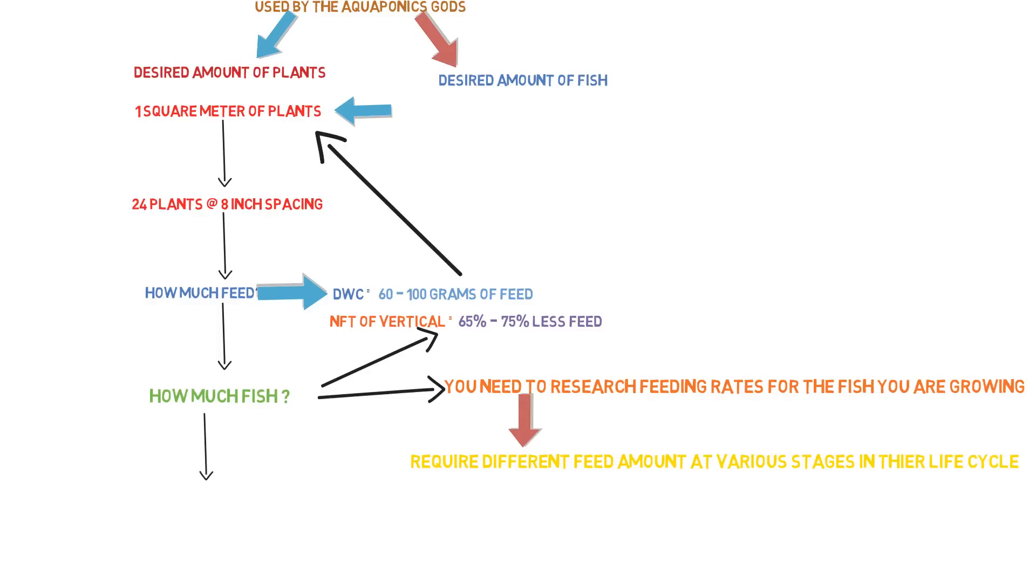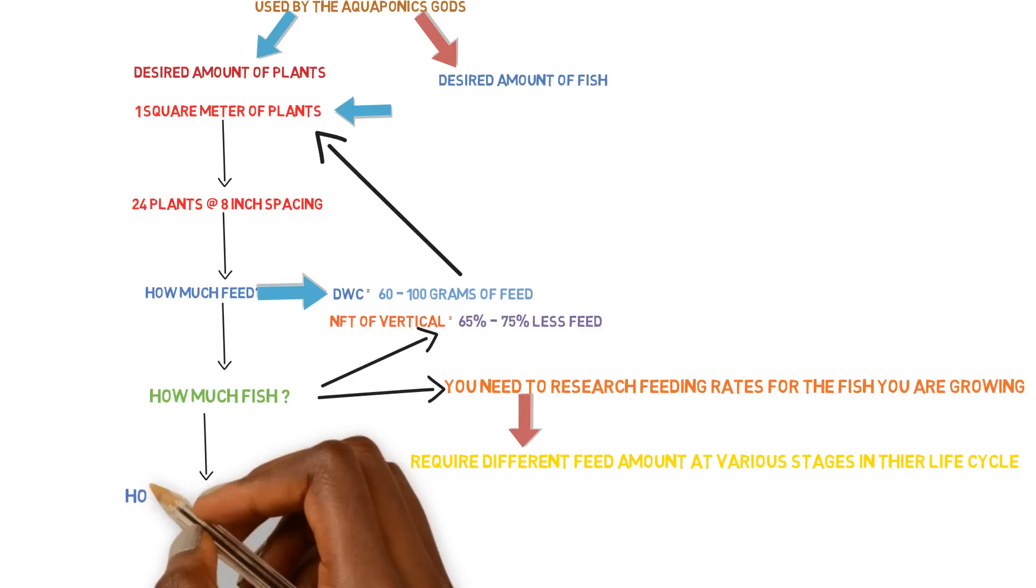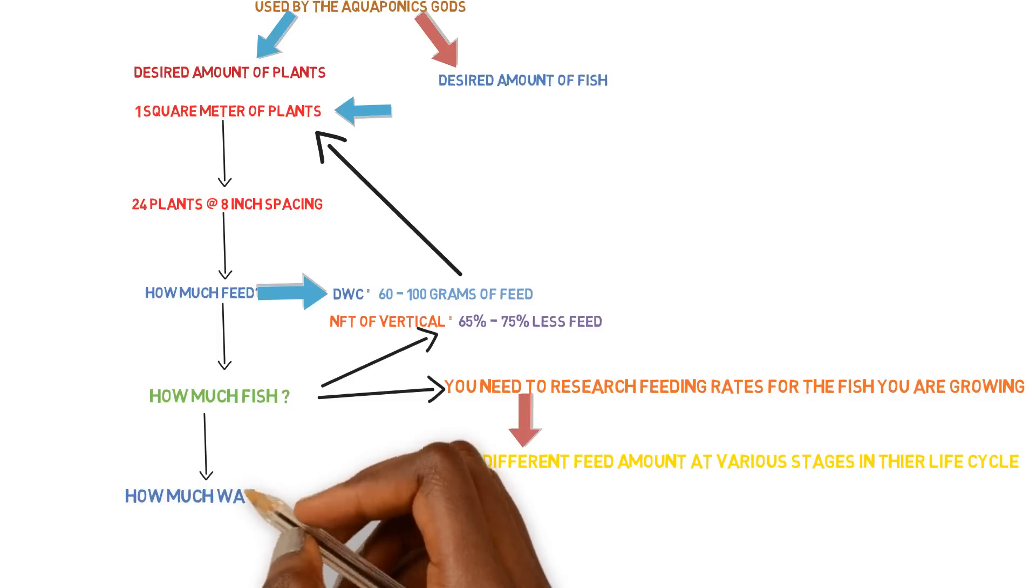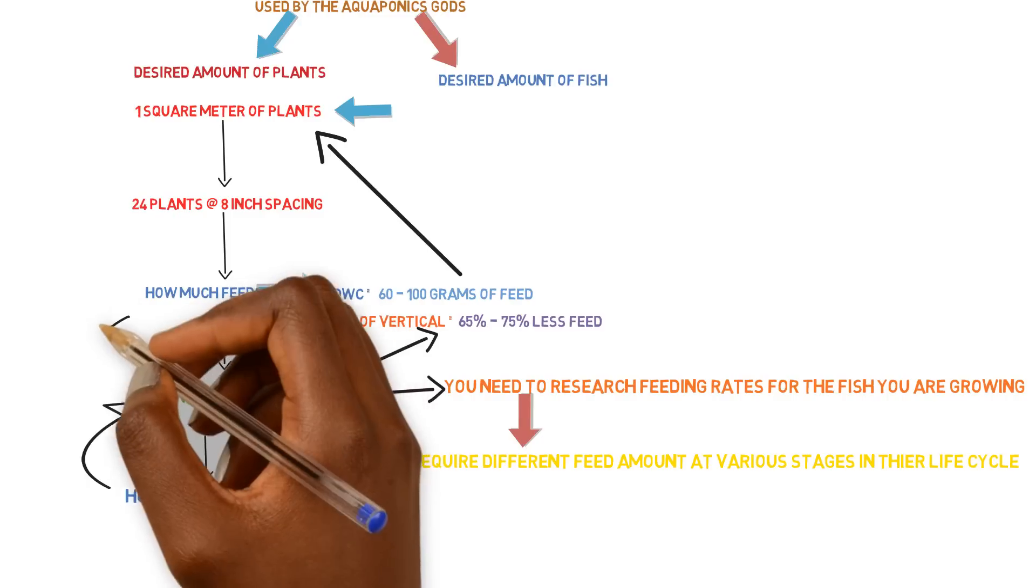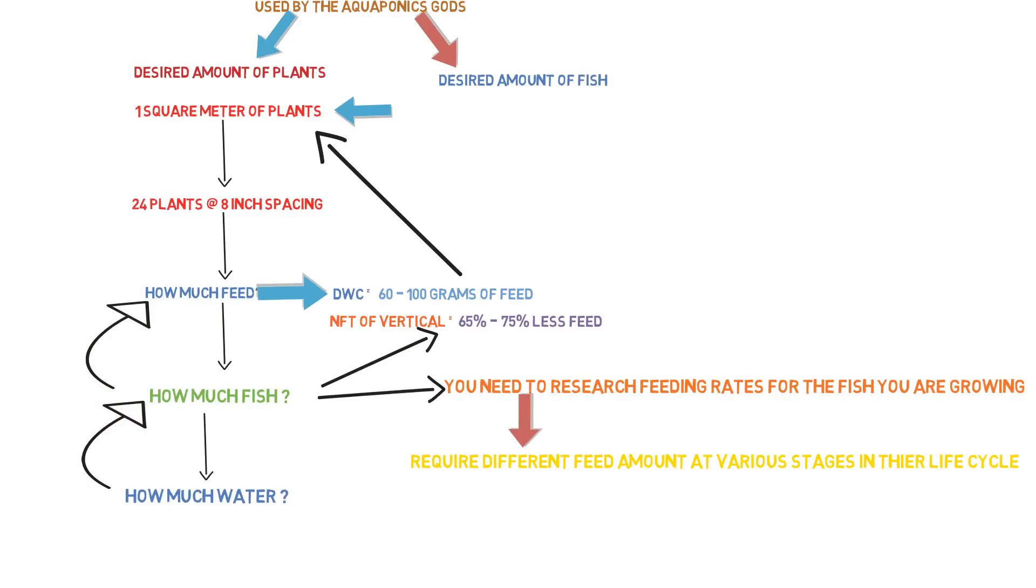And then from there, you even reverse engineer it even further. Now you can find out how much water volume you need in order to support that much amount of fish, which is required to eat that much amount of food, which is required to supply that much amount of plants.